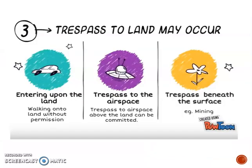Trespass to Land doesn't just cover walking onto somebody's land. There are actually three ways that you can commit trespass to land. The first way is by entering upon the land, which means that the person has walked onto the land without permission, refused to leave when permission has been withdrawn, or thrown objects onto the land.